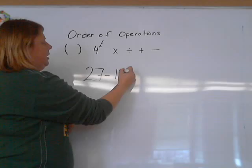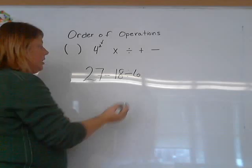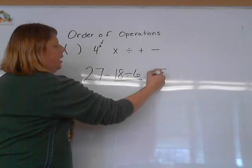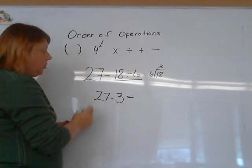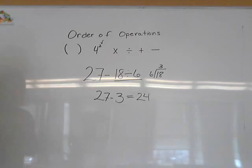We have 27 minus 18 divided by 6. Now according to the orders of operation, the first thing that we do is divide 18 by 6. And I know that that is 3. So I rewrite the expression, 27 minus 3. And then because subtraction is the only thing left over, we just figure it out. The answer is 24. That one's pretty simple.